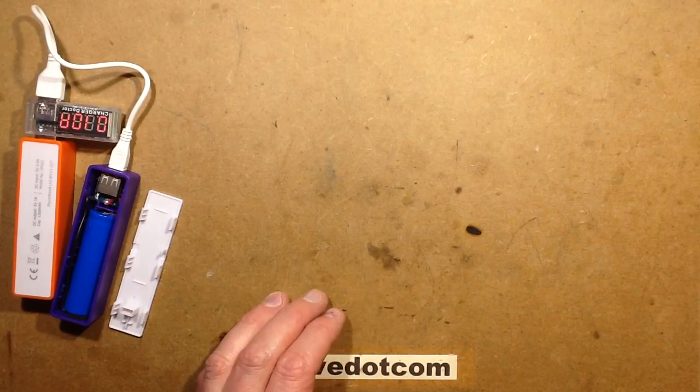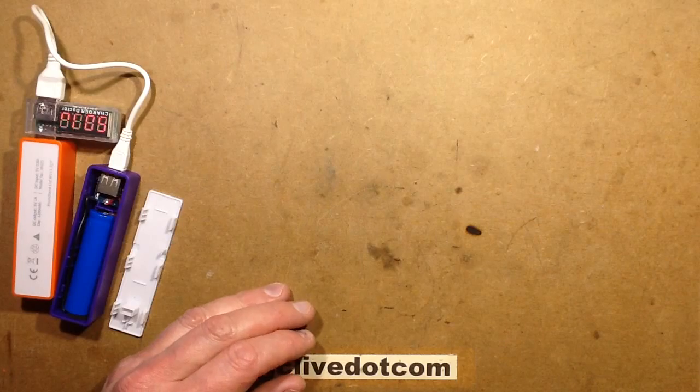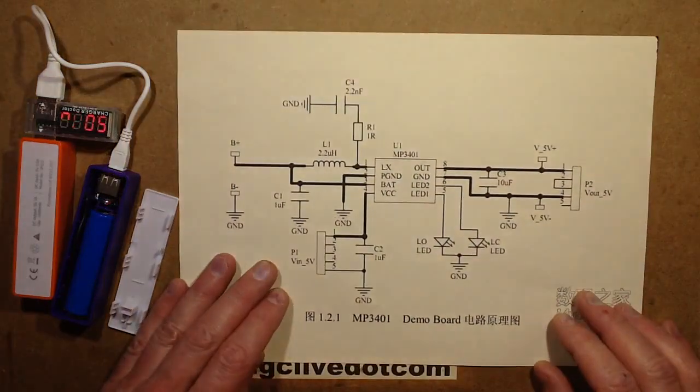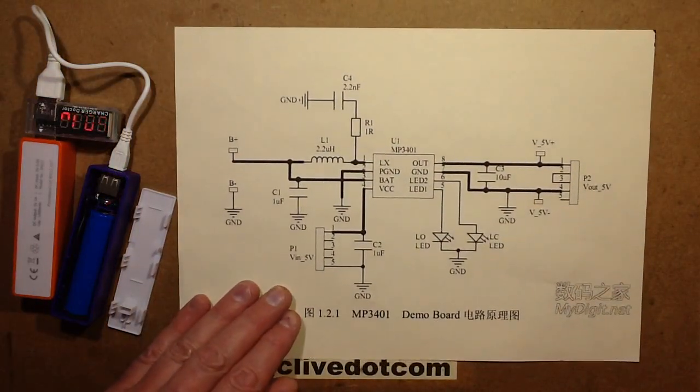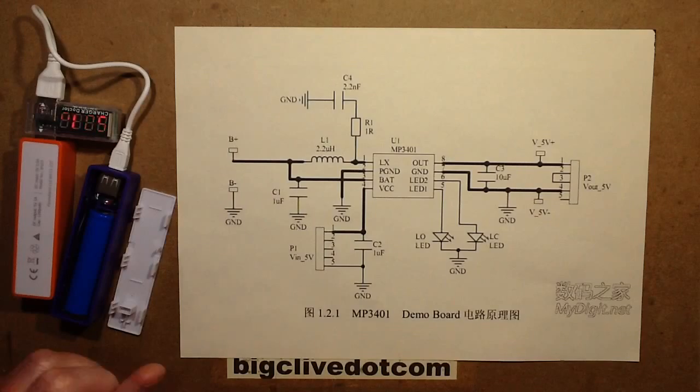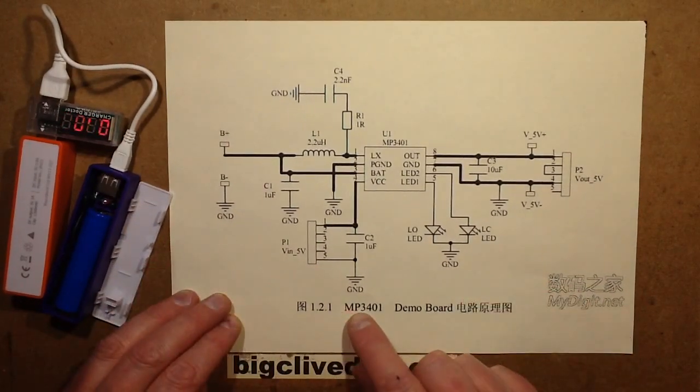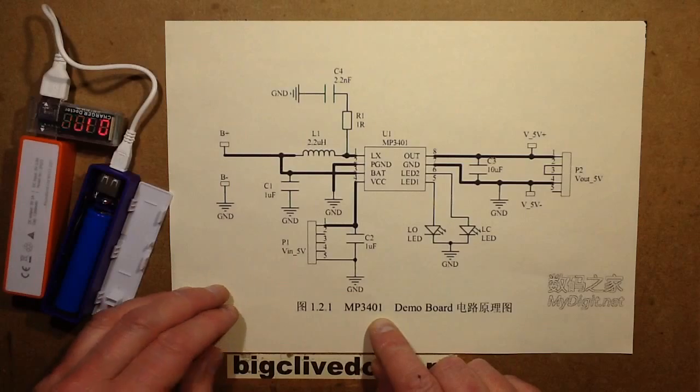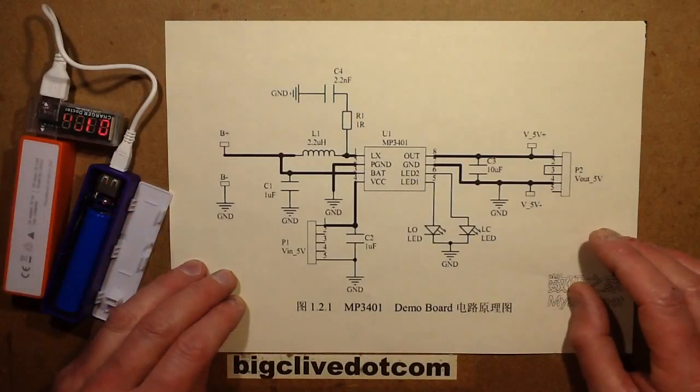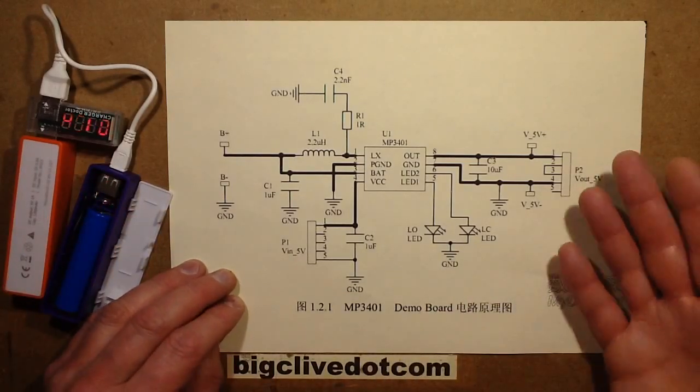However, the little circuit board inside contains a very simple circuit. It contains, I'll show you that afterwards. Here's the circuit, it contains an MP3401, and I tried looking for the data sheet and all I found was this image which is all you really need.